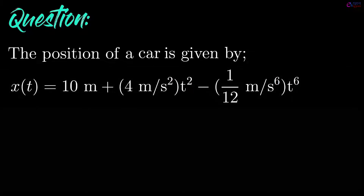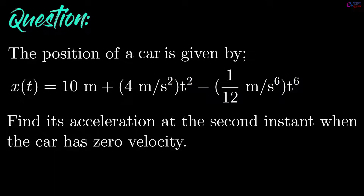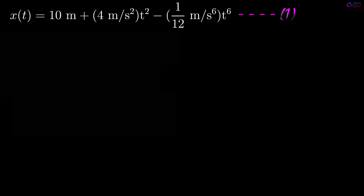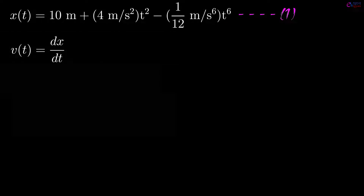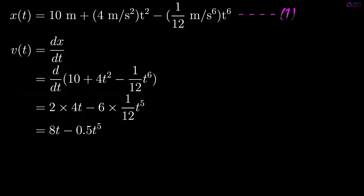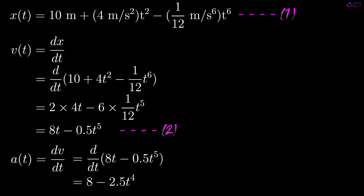Now let's solve a basic and conceptual question on this topic. The position of a car is given by x = 10 + 4t² − (1/12)t⁶. You have to find its acceleration at the second instant when the car has zero velocity. The instantaneous velocity is v = dx/dt = 8t − 0.5t⁵. So the instantaneous acceleration of the car is a = dv/dt = 8 − 2.5t⁴.